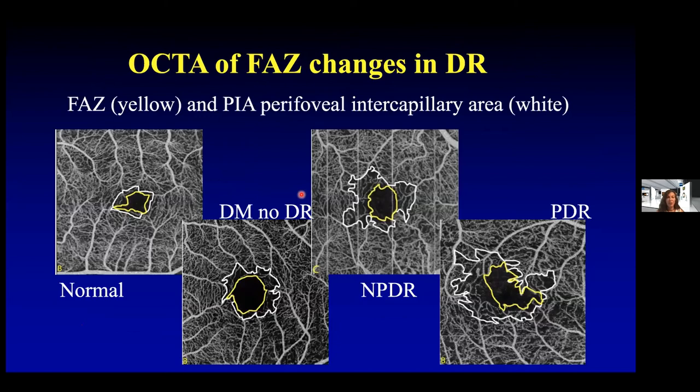Here's another image showing that in eyes with different degrees of diabetic retinopathy, the foveal vascular zone measured around the superficial capillary plexus and in the deeper capillary plexus may be differentially affected.